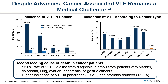Despite these advances, cancer-associated VTE remains a very big medical challenge. Rates of VTE are quite substantial in people with cancer — looking at all VTE in all cancer patients, you're looking at rates close to 13%, so more than 1 in 10 cancer patients will get a blood clot. This is much higher than the control population adjusted for age and other comorbidities. The non-cancer population has much lower rates, and this extends across all VTE diagnoses, whether DVT-only, pulmonary embolism only, or a combination of DVT and PE.